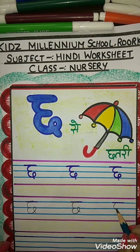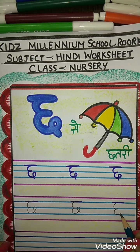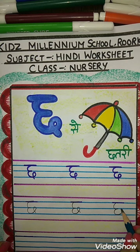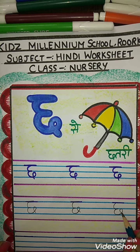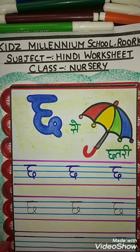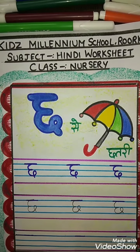Make a curve, joining with another curve. Then make a curve like this, bring it down. Chh se Chhatri.